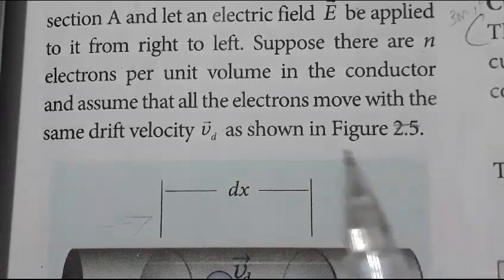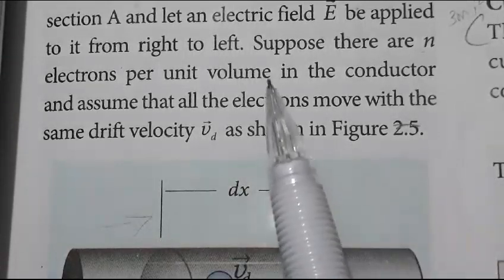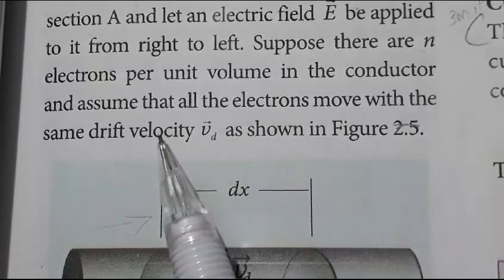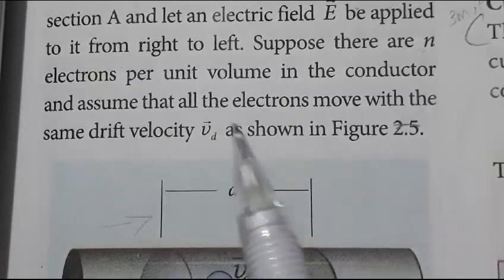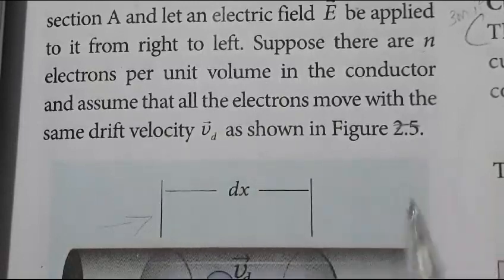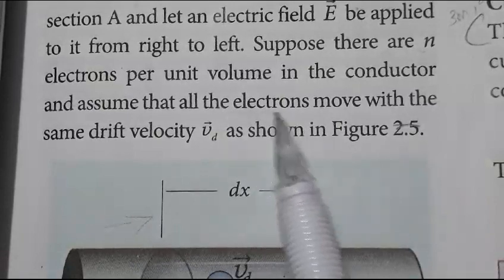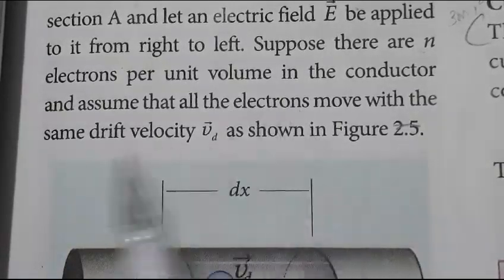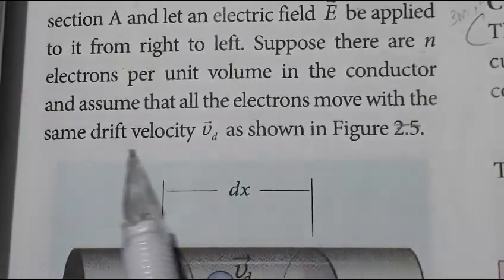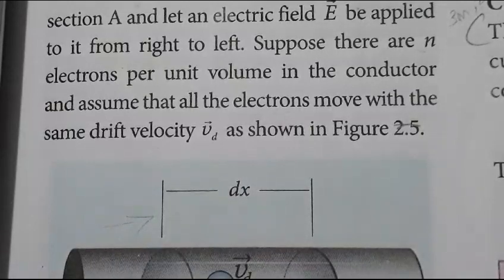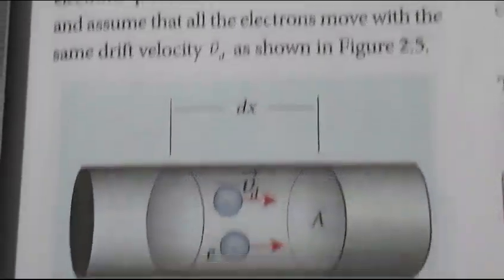Assume that all the electrons move with the same drift velocity vd, as shown in the figure.